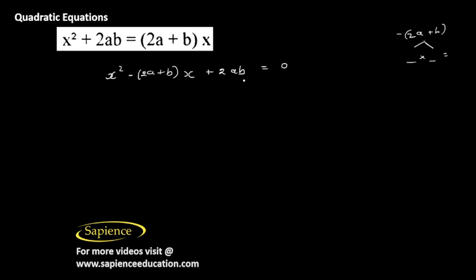In this case, 1 into 2ab, so that is just 2ab. So which two numbers on adding you get minus 2a plus b and while multiplying you get 2ab?